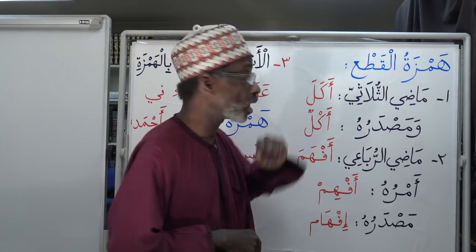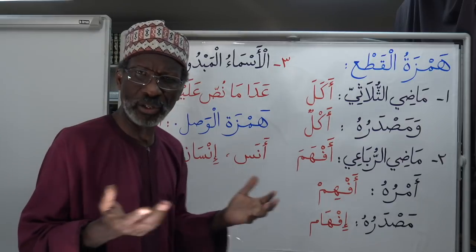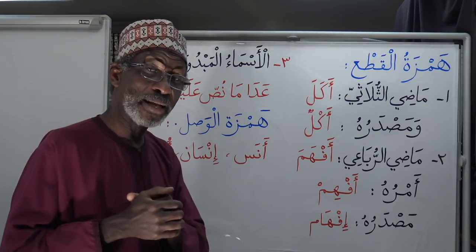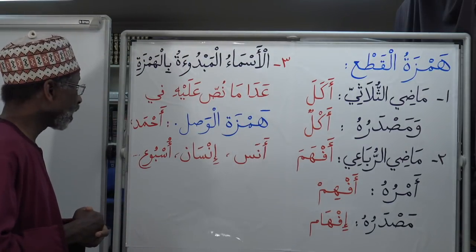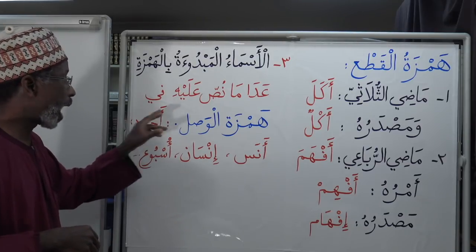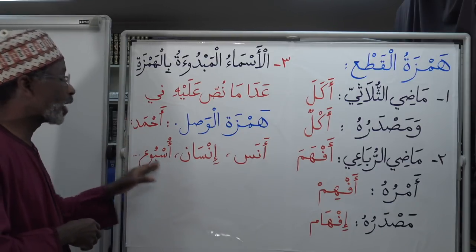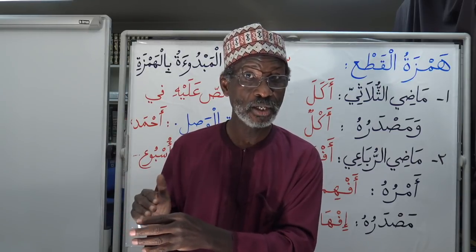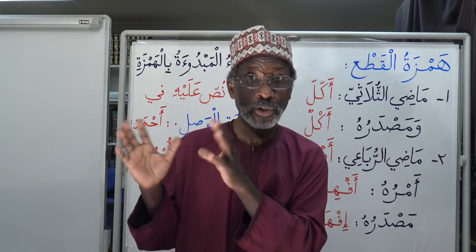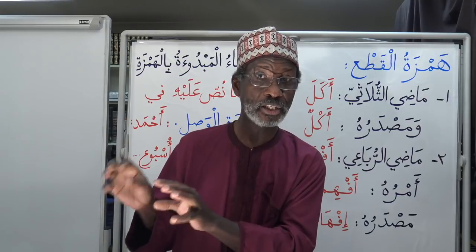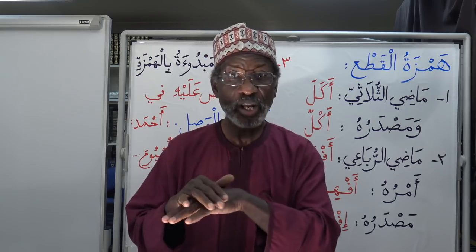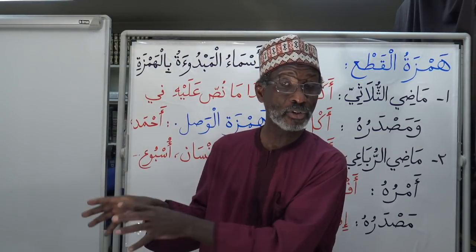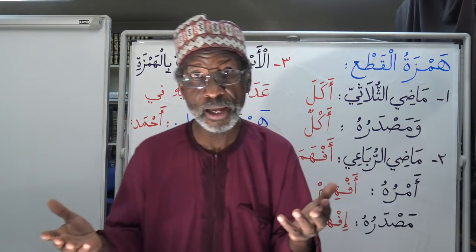The third place where you find Hamzatul Qat' is in nouns that start with alif or Hamzatul Qat'. Apart from all the nouns mentioned for Hamzatul Wasl, any other noun needs Hamzatul Qat' — such as Ahmad, Anas, insan, usbu', and so on. The important thing is: revise the Hamzatul Wasl list — imra'atun, imra'atani, ithnan, ithnatani — and make sure you don't put the symbol of Hamzah on those. For any noun not in that Hamzatul Wasl list, put Hamzah on it, either above or underneath as appropriate.